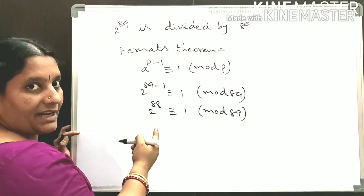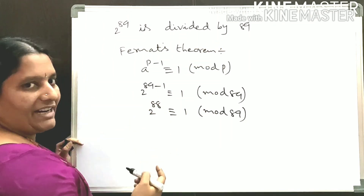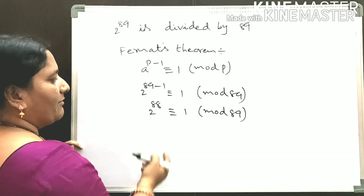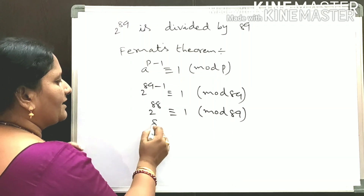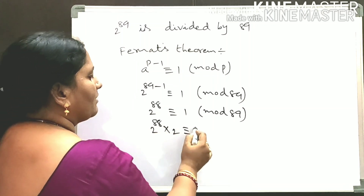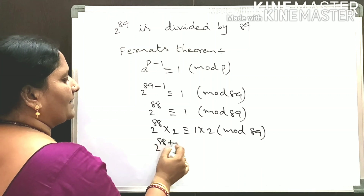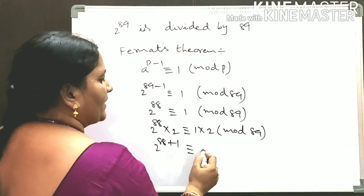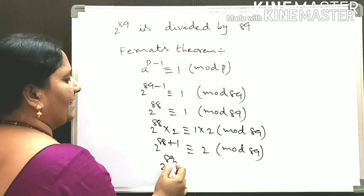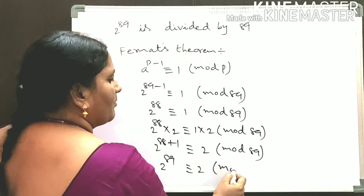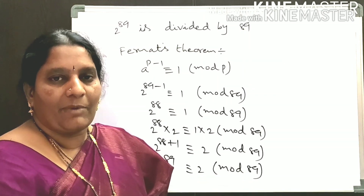But we need to find the remainder when 2 to the power of 89 is divided by 89. So we need to make 2 power 88 into 2 power 89. For that, multiply both LHS and RHS by 2. We get 2 power 89 is congruent to 2 modulo 89. So when 2 power 89 is divided by 89, the remainder is 2.